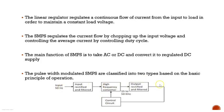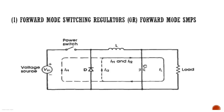The pulse width modulated SMPS can be classified into two types based on operation. The first one is the forward mode switching regulator. In the circuit diagram of a forward mode switching regulator, there is a voltage source, a power switch placed between the voltage source and the inductor, a diode, and a capacitor connected in parallel to the load. The capacitor filters out ripples to give a regulated DC output.